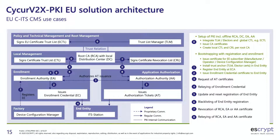This is the SaKa V2X PKI — the European version. It's a complex system. In the diagram you have the end entity at the bottom, the enrollment authority box, the application authorization box, root management, and the policy on top. Think of it as: you have the client side, enrollment side, certificate management, root CA, and the policy that dictates how things work. Each is a software certificate authority component with its own function in the standard — enrolling, revoking, or providing authorization certificates.